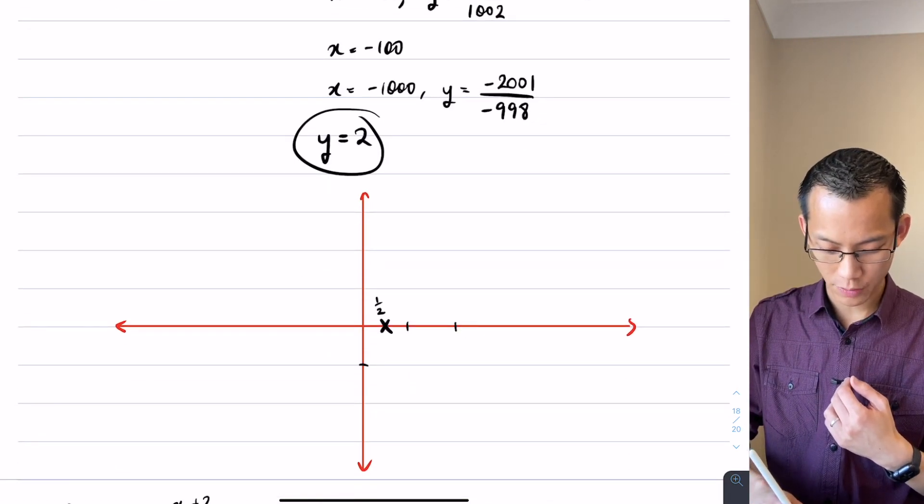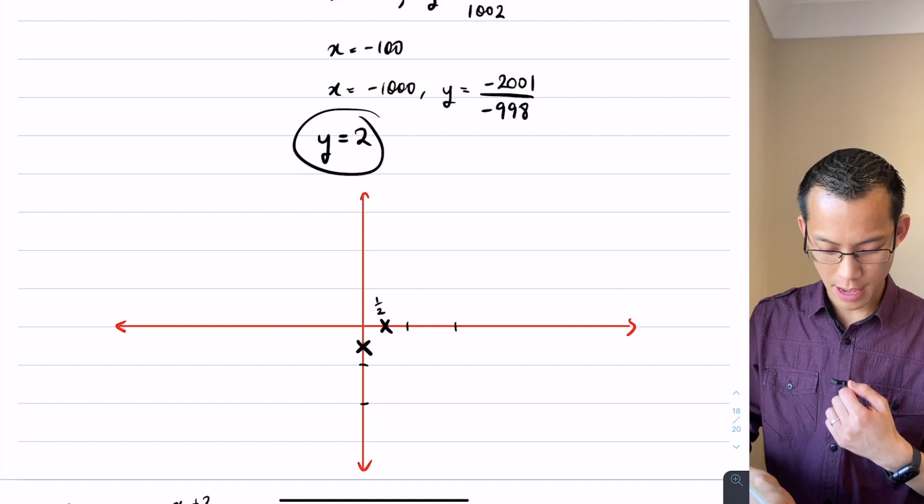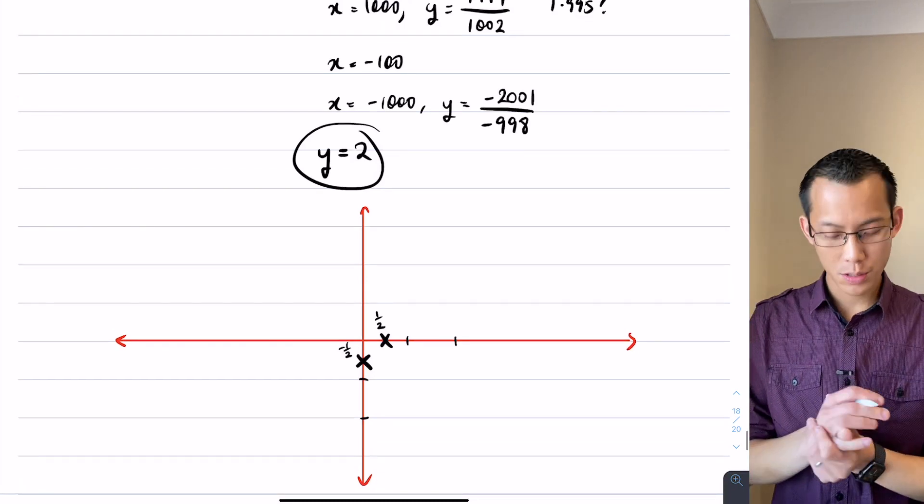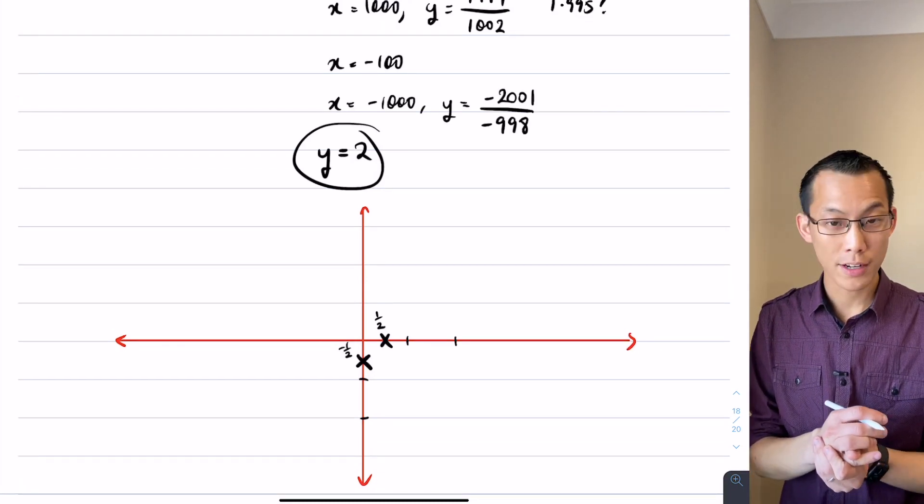And then I said y equals negative a half for my y-intercept. So that's going to be, if I call that one, negative one, negative two, it's going to be about there. So this is negative a half. So I've got my intercepts, and then I also had my vertical asymptote.